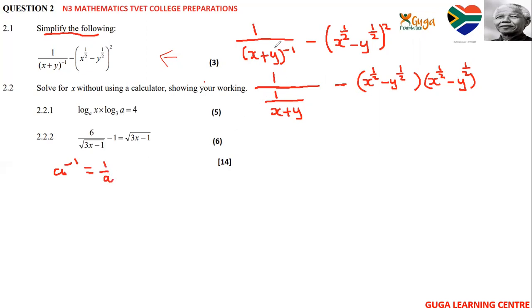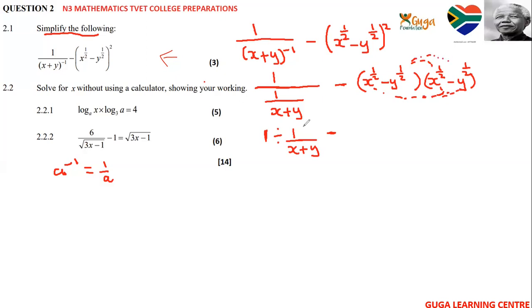Since this is a long division, I can say: one divided by — so that you can follow — one over x plus y, minus. I want to make sure you follow. Let's open a square bracket because the negative sign is very dangerous. So x to the half over x to the half will give us x.